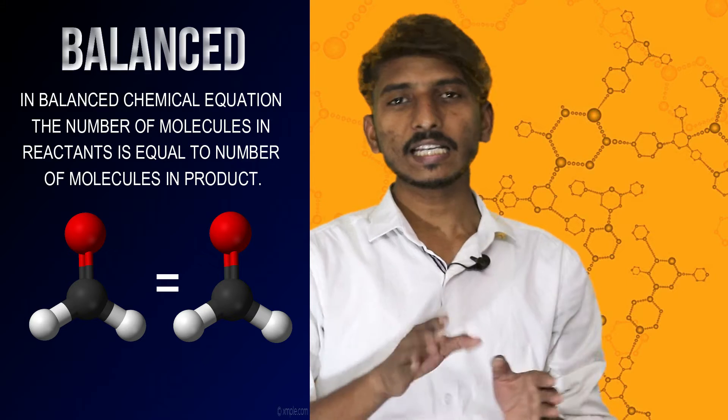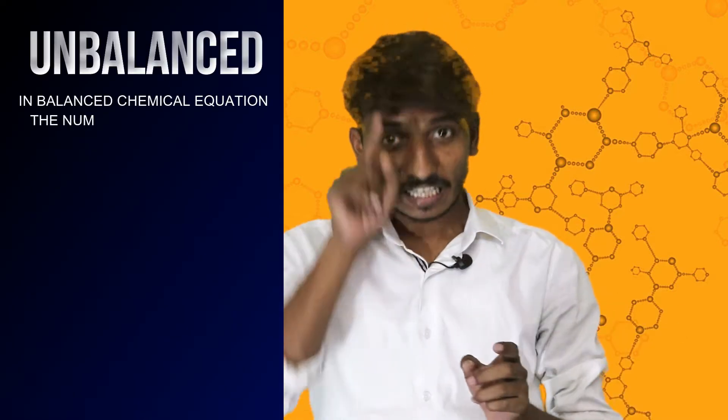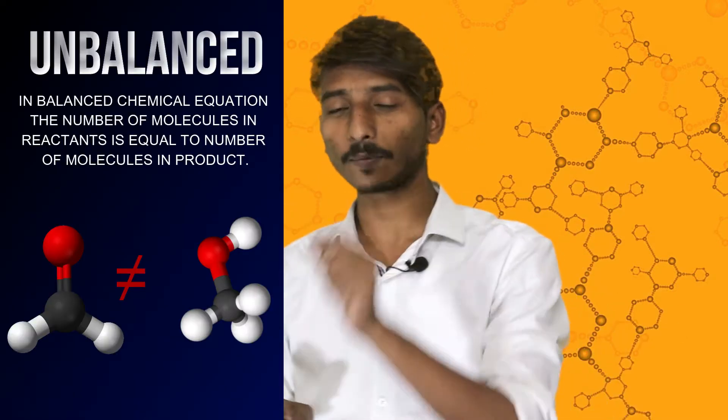In a balanced chemical equation, the number of molecules of reactants is equal to the number of molecules in the products. But in an unbalanced chemical equation, these numbers are not equal. For example, if H2O2 in the reactant forms H2O as the product, the reactant side has 4 molecules but the product side has only 3 molecules — so this is an unbalanced chemical equation.